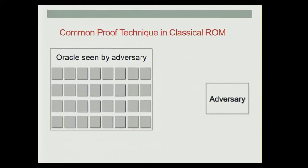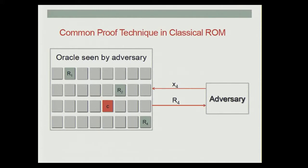In pictures, we have the oracle seen by the adversary. Each row in this diagram represents a query, and each column represents the value of the oracle at a particular input. So the adversary on its first query sends over X1 — corresponding to the second column — we generate some randomness R1 and send it back. When the adversary sends X2, we generate some new randomness R2 and send it back. Now, let's say the third query was the randomly chosen special query: instead of responding randomly, we respond with the challenge C. For subsequent queries, we respond with new randomness.